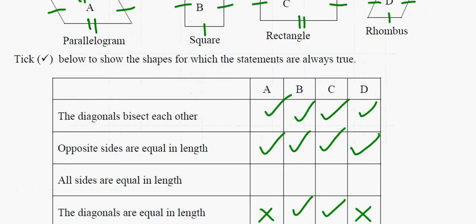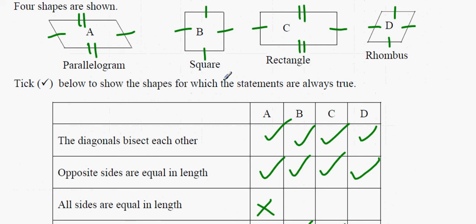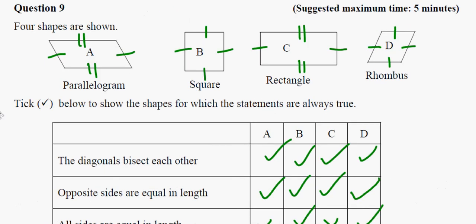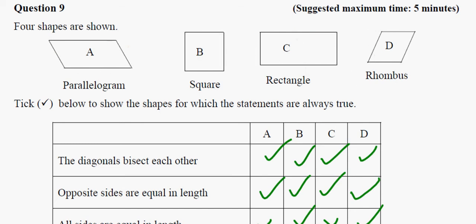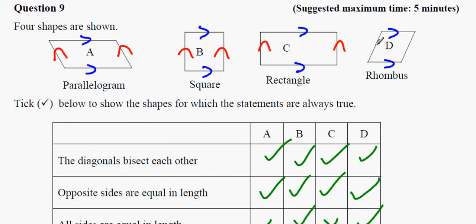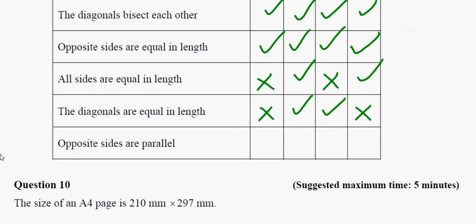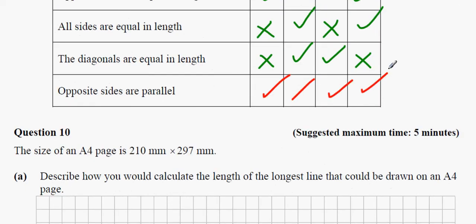Are opposite sides equal in length? Yes in all four cases. Are all sides equal in length? Parallelogram: no. Square: yes. Rectangle: no. Rhombus: yes. Are opposite sides parallel? Parallel means having the same slope. In all four shapes — parallelogram, square, rectangle, and rhombus — the opposite sides go in the same direction. So opposite sides are parallel in all four cases.